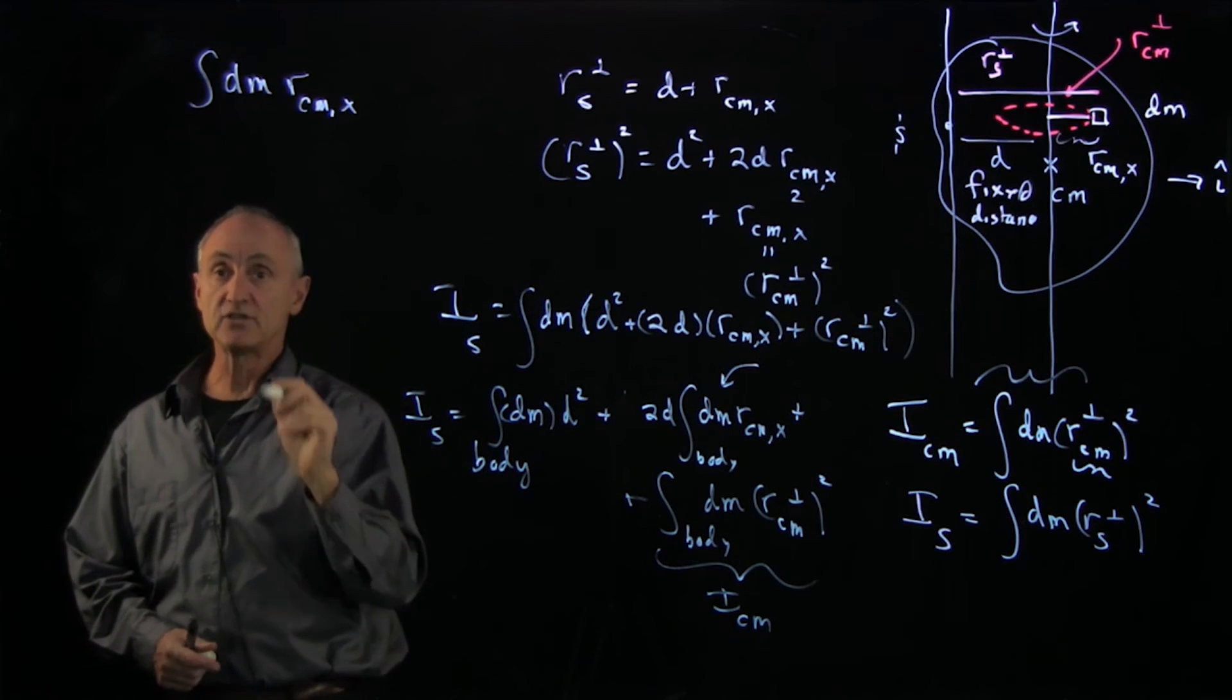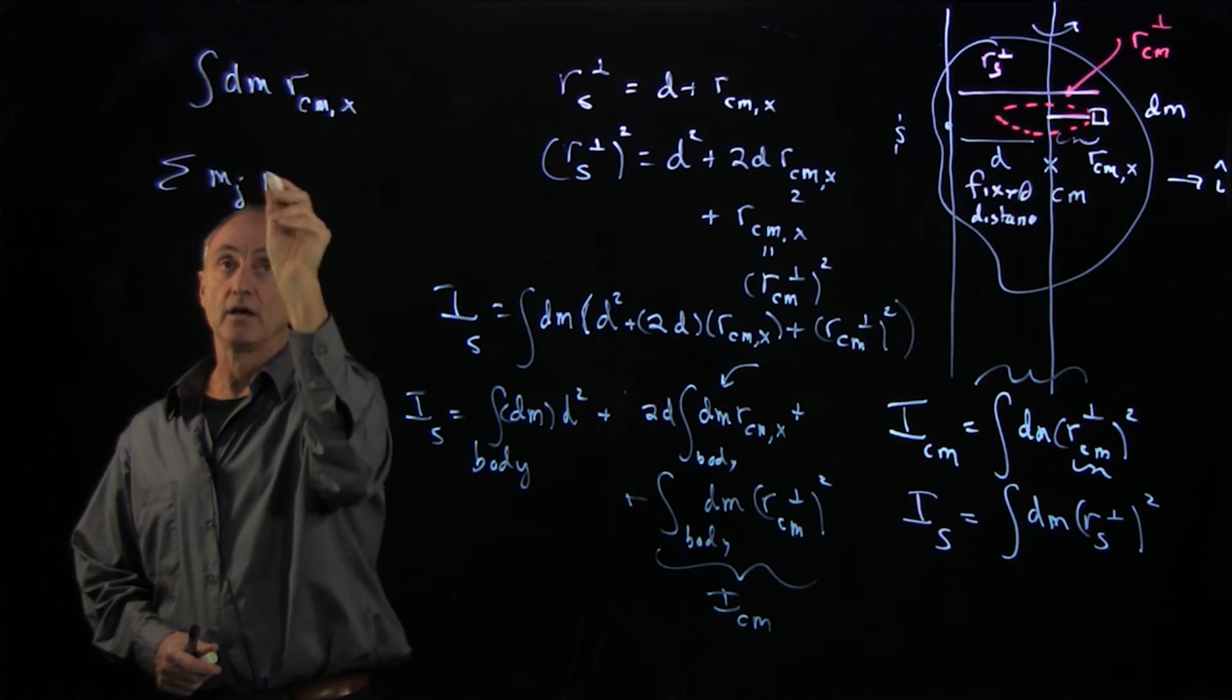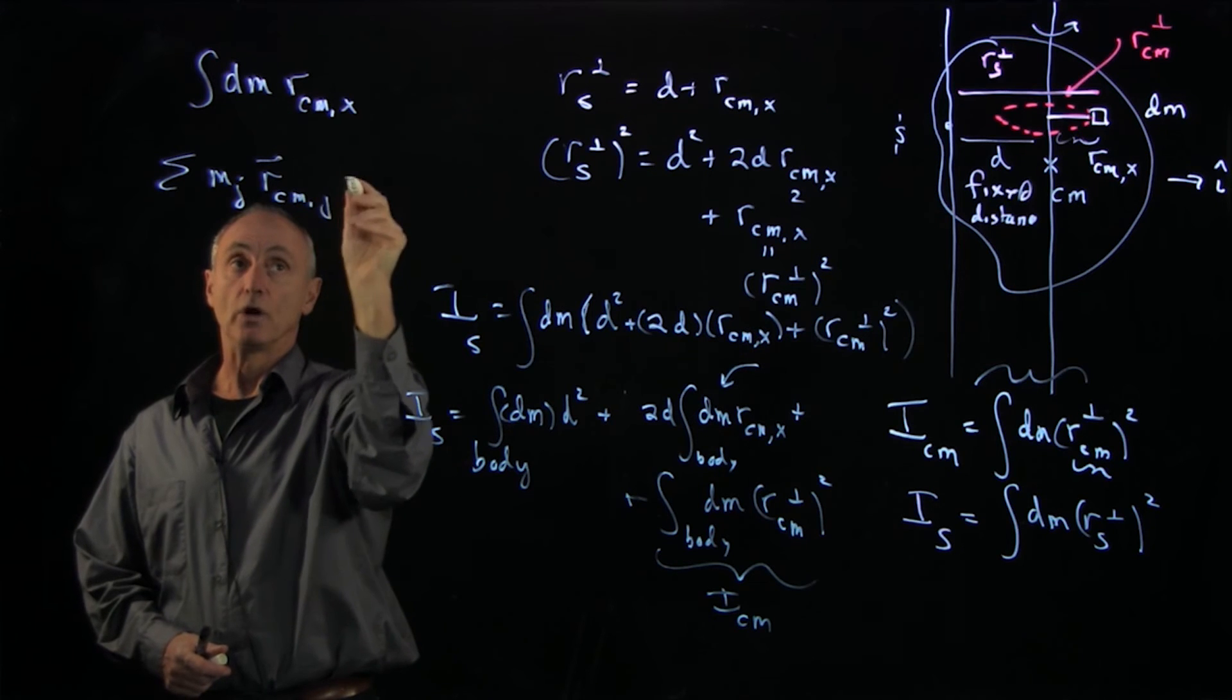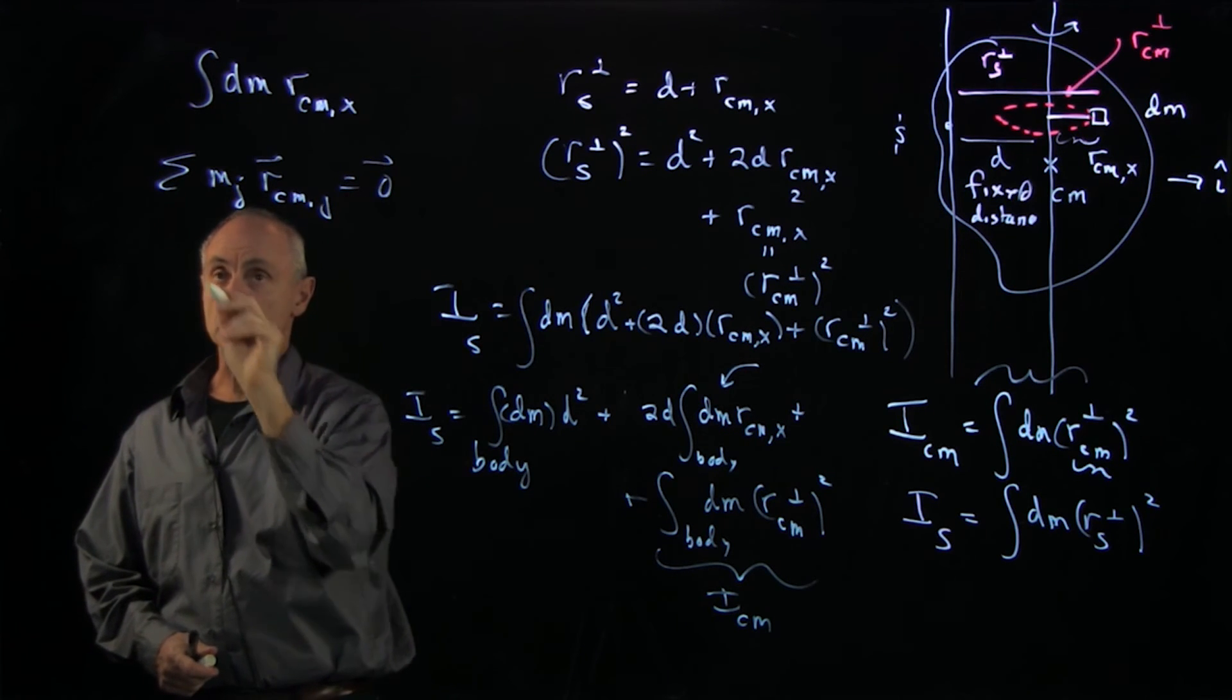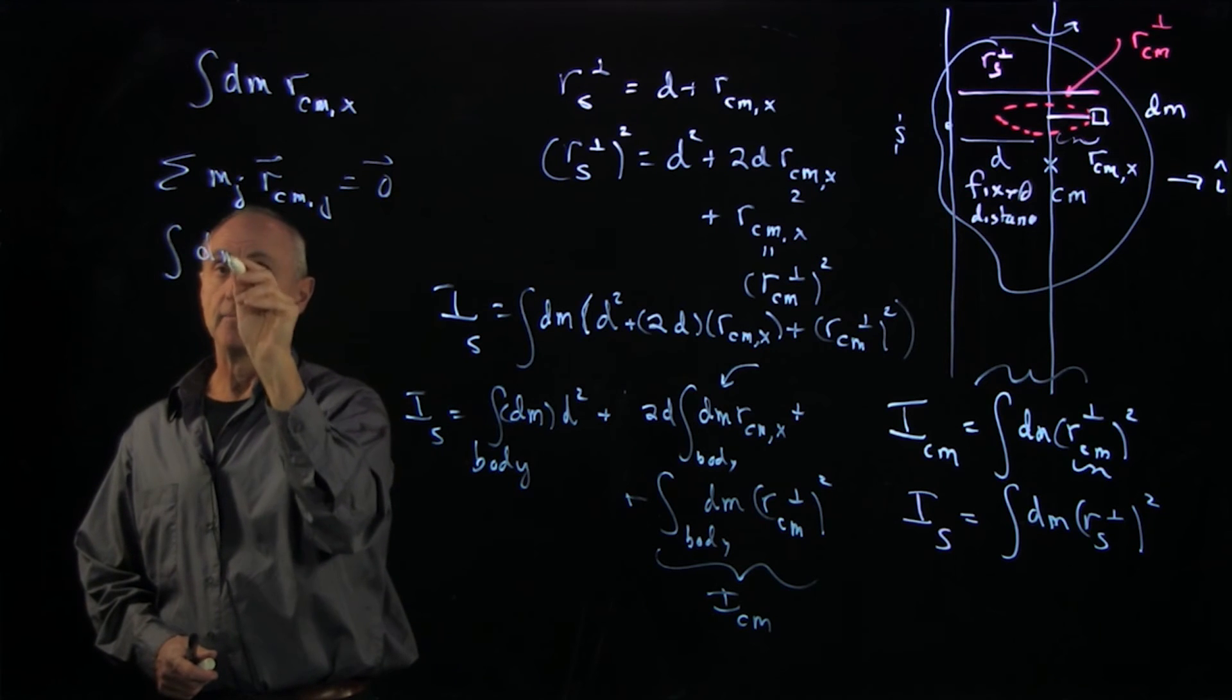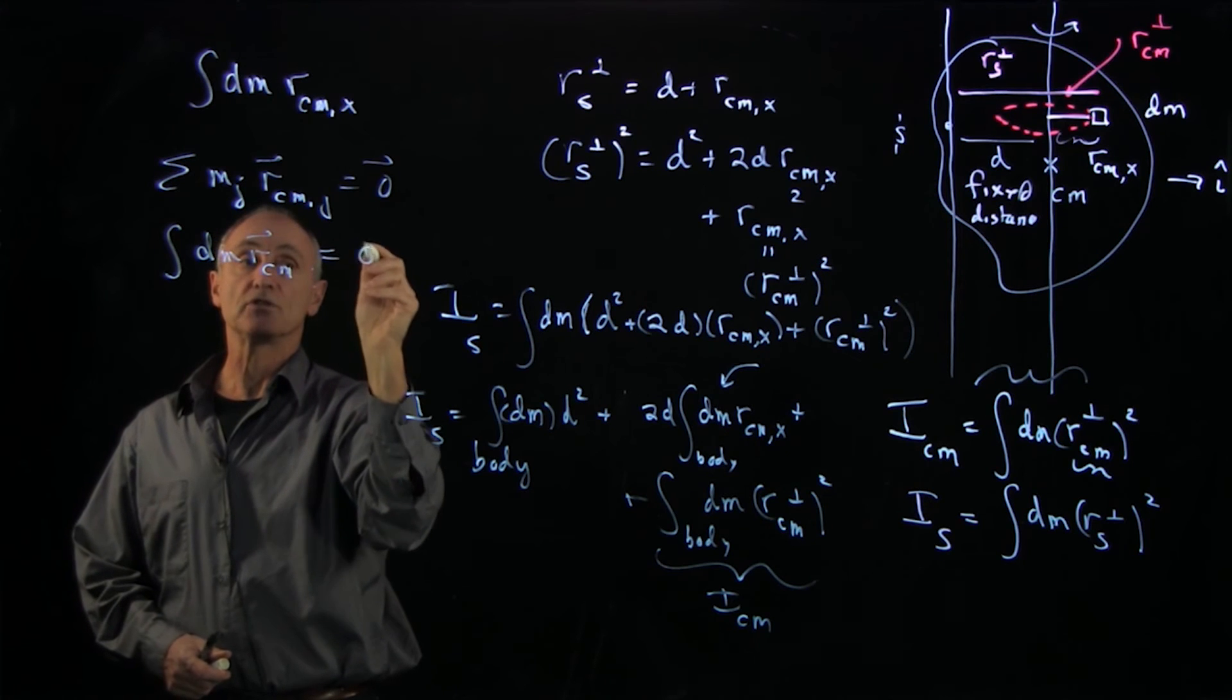Recall that we defined center of mass. We had the condition that the sum of m_j r_cm_x was 0. Now, for an integral relationship, this is dm r_cm_x cm equal to 0.